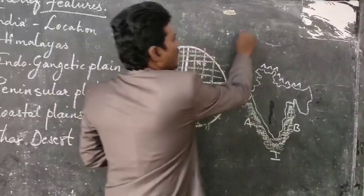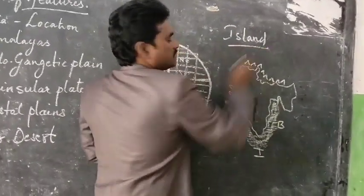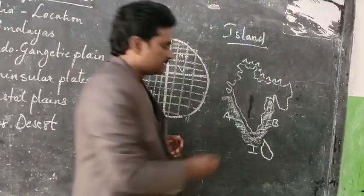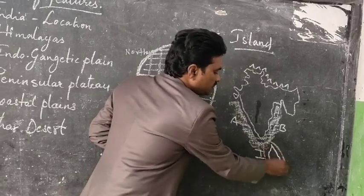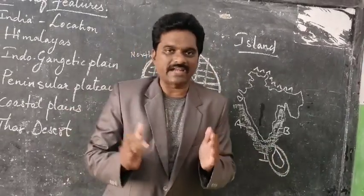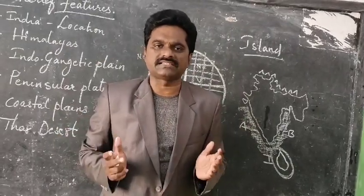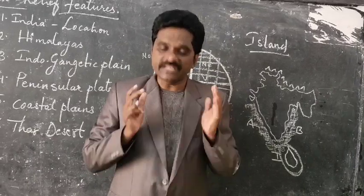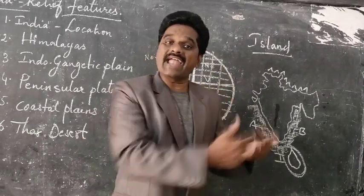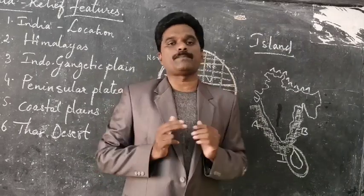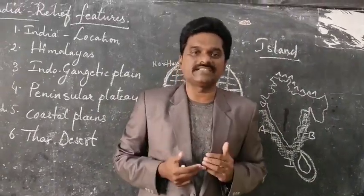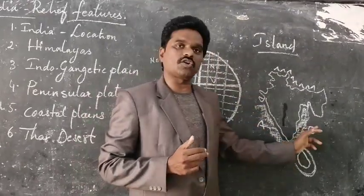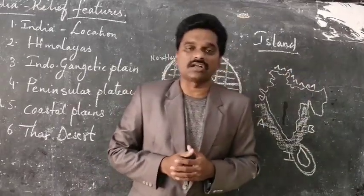Now you are going to learn what is meant by an island. Take the example of Sri Lanka — Sri Lanka is covered with water on all sides. A piece of land covered with water on all sides is called an island. Whereas a piece of land covered with water on three sides and land on one side is called a Peninsula. So confirm yourself: India is a Peninsula because it is covered with water on three sides and land on one side.